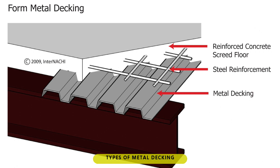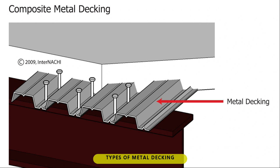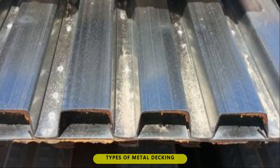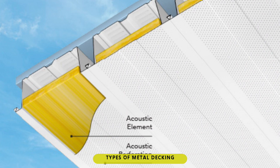Types of metal decking. 1. Form decking: the metal decking serves as a permanent formwork for reinforced concrete slab until the slab can support itself and its live load. 2. Composite decking: the metal decking has an embossed rib pattern to bond with the concrete, and welded with shear studs connected to the supporting joist or beam below the decking. 3. Cellular decking: a flat steel sheet is welded on the metal decking to form a series of raceways for electrical and communications wiring. It can also serve as an acoustic ceiling when the voids are filled with glass fibers.